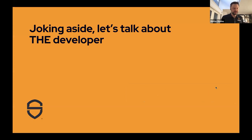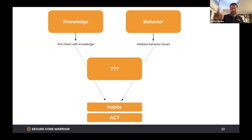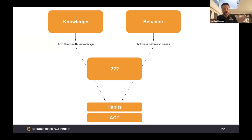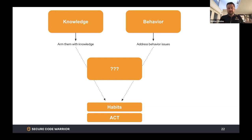Let's dive a little bit into the research and talk about the developer. We have knowledge, we have behavior, and that leads to habits. If you put knowledge and behavior together, it leads to habits that a person can act on. What I'm interested in is that middle section — what do we know about the knowledge, what do we know about the behavior, and can we influence that? Can we take that into consideration so it leads to better habits and the person can act on that in a better way?